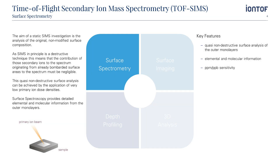The aim of a static SIMS investigation is the analysis of the original, non-modified surface composition. As SIMS is in principle a destructive technique, this means that the contribution of secondary ions originating from already bombarded surface areas to the spectrum must be negligible. This quasi non-destructive surface analysis can be achieved by applying a very low primary ion dose density. Surface spectrometry provides detailed elemental and molecular information from the outermost layers. The analysis consumes less than one percent of a monolayer, and you can achieve PPM or PPB sensitivity.